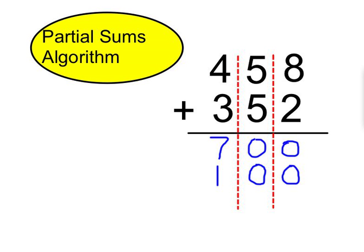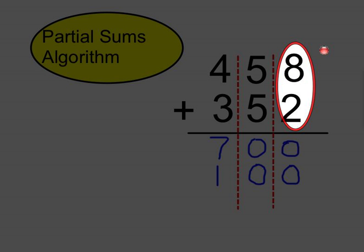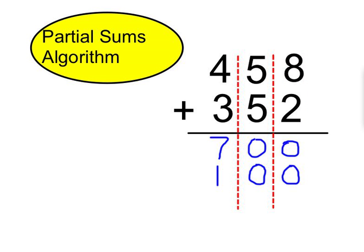And then we would move on to the ones. So here they would look at what 8 plus 2. And 8 plus 2 is 10. So the one needs to go in the tens place, 0.